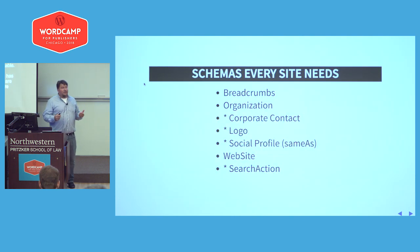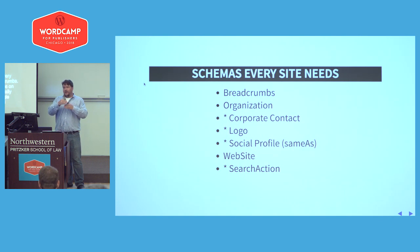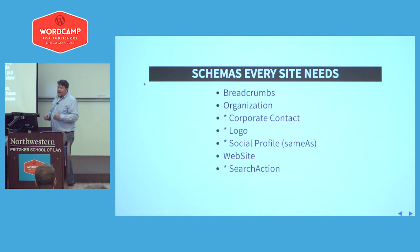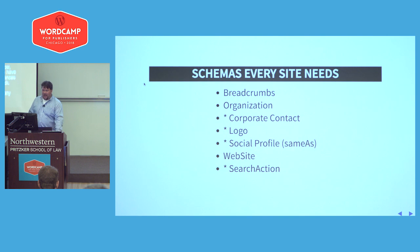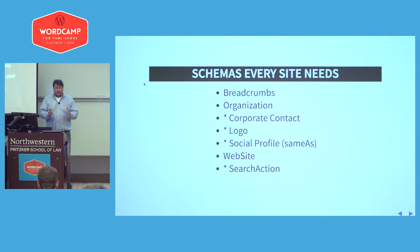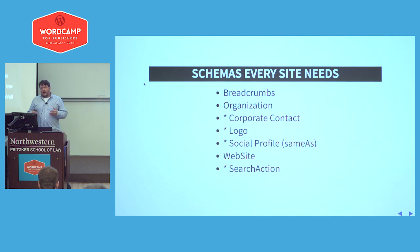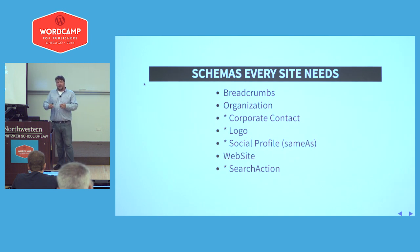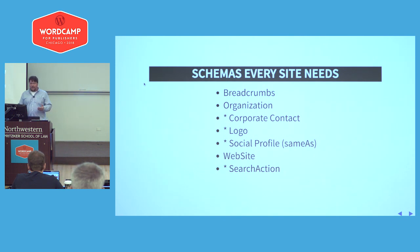Schemas every website needs: breadcrumbs — if you have breadcrumbs on your site, you can gain real estate in Google search because they'll put your breadcrumbs right below your title as little green links, and more real estate in Google means more chances of getting a click. Organization — if your website represents a company, you can have your corporate contact, logo, and same-as, which are your social profiles. You're basically telling Google that you're the same entity on Facebook, Twitter, and all other sites. Then there's a website schema with a search action — if your site has a search functionality, you can actually get that search box into Google.